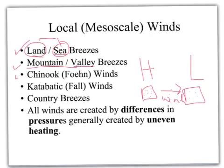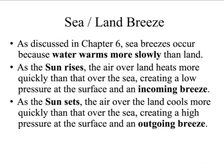I have an assortment of local or middle-scale winds here. I guess the main thing to note is that in all cases, there is a special scenario set up for each of these local winds to occur. So we're going to start with the pair of local winds called the sea breeze and the land breeze.